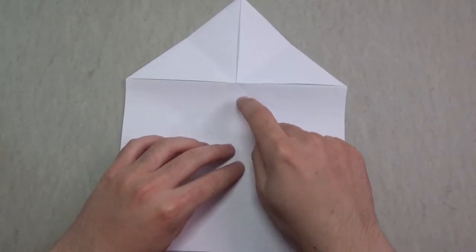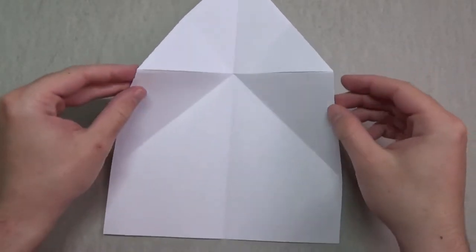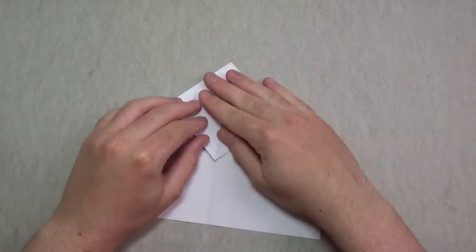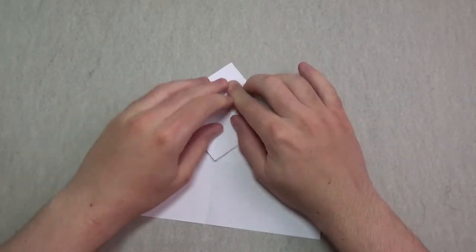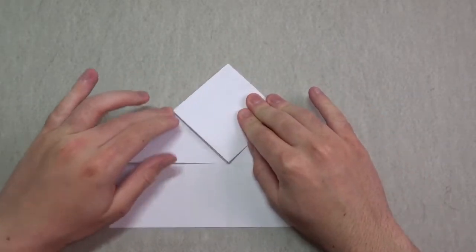Now we're going to make a water bomb base. Poke the middle in like this and bring these sides down. Squash here. Like that.